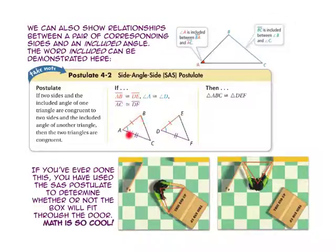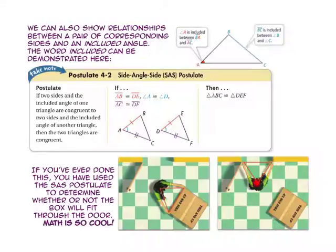Therefore, triangle ABC is congruent to triangle DEF. If you've ever measured something with your arms to see if it would fit somewhere else, you have used the side-angle-side postulate to determine whether or not that something will fit wherever you want it to go.